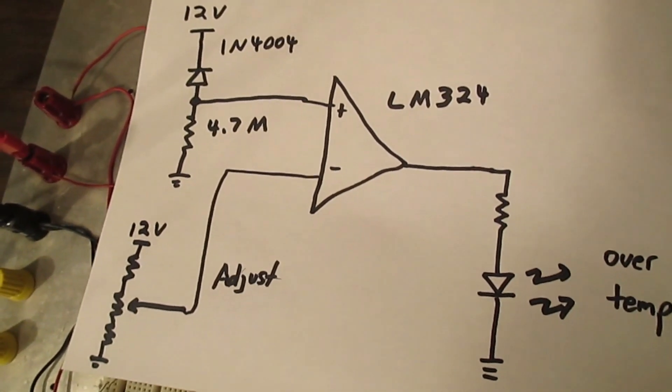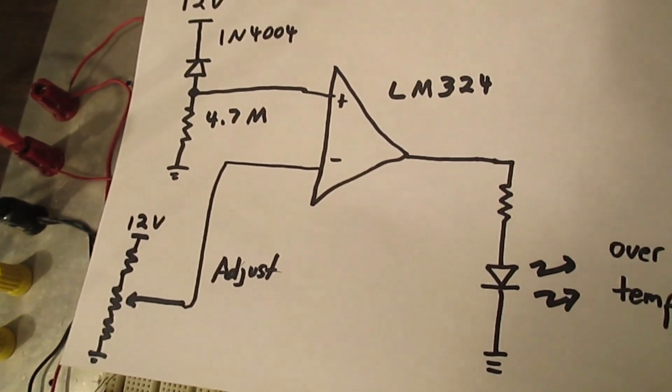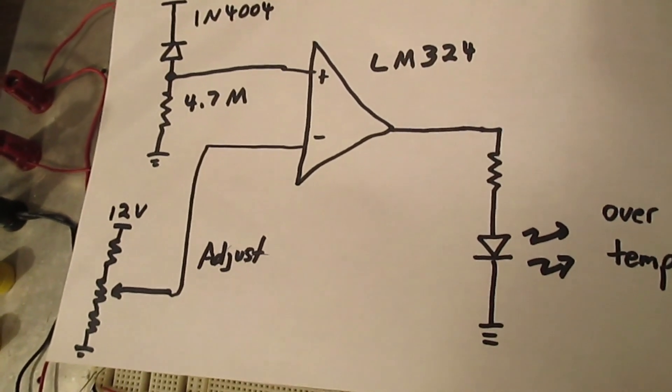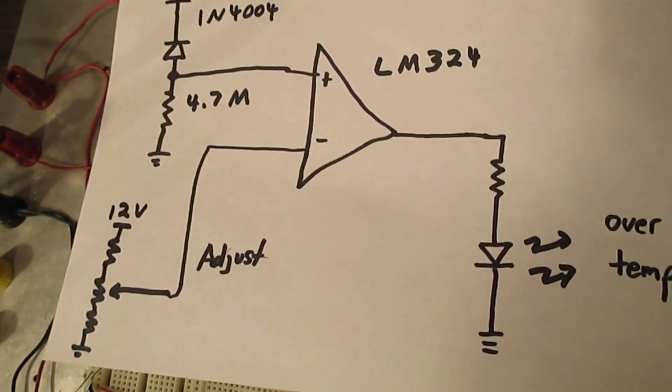We are using a trimmer to be able to adjust the trip point as to when we want the thermal switch to activate.